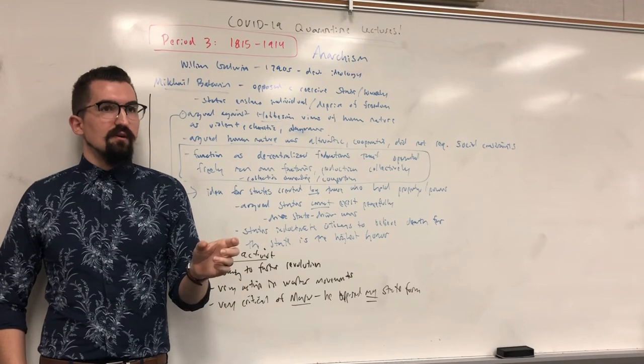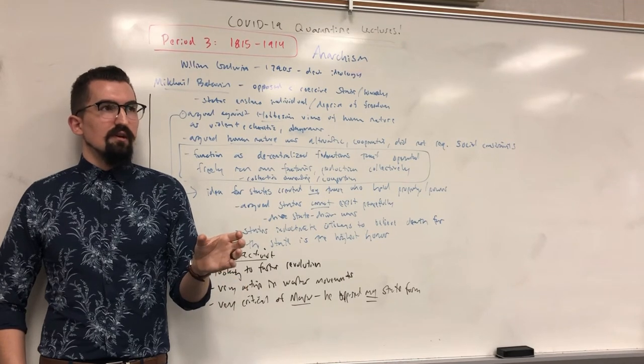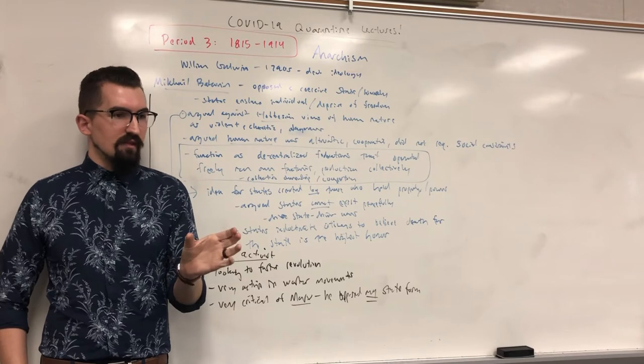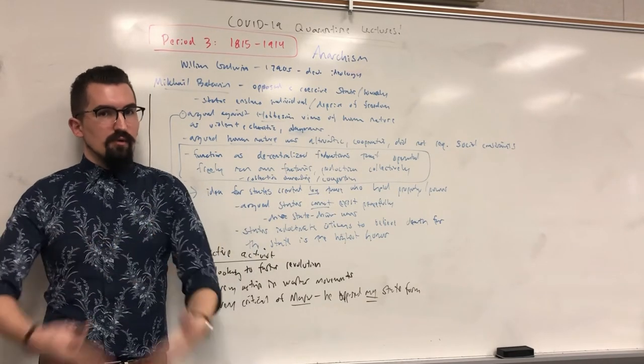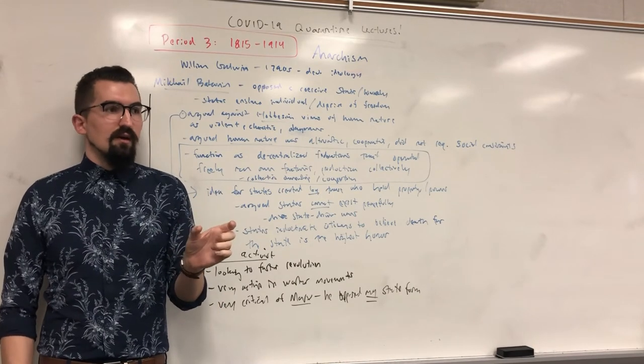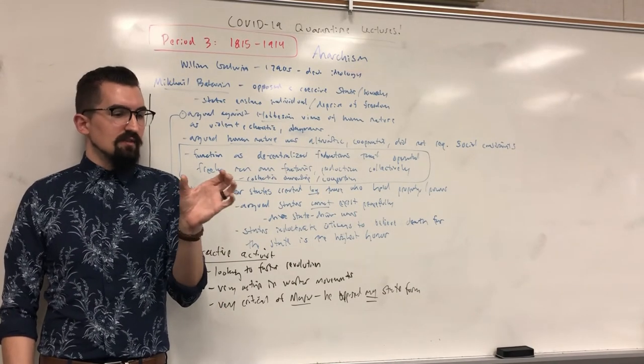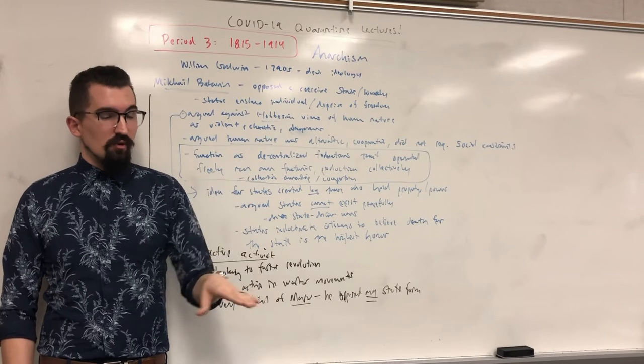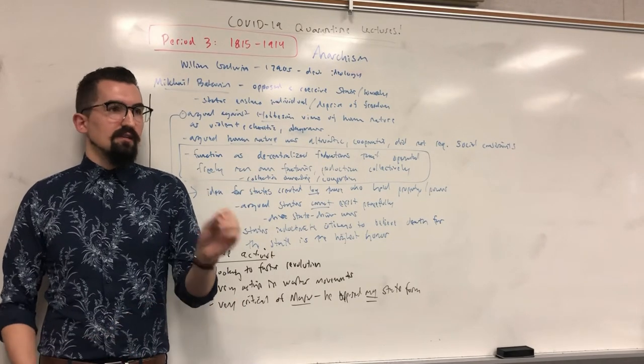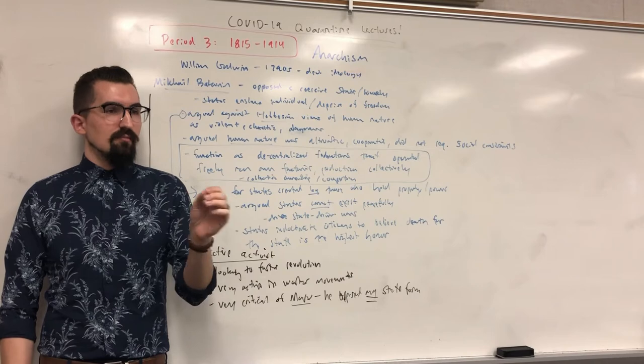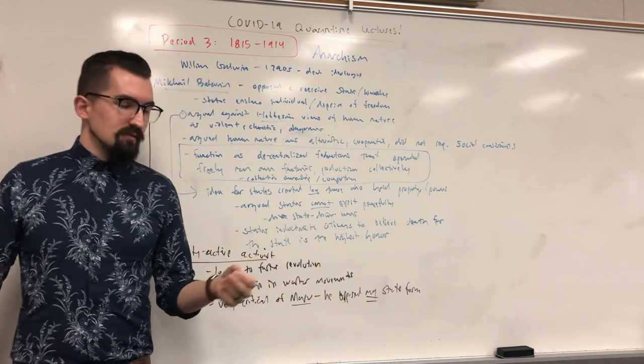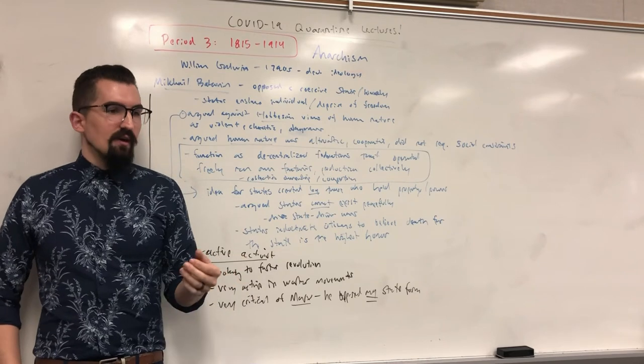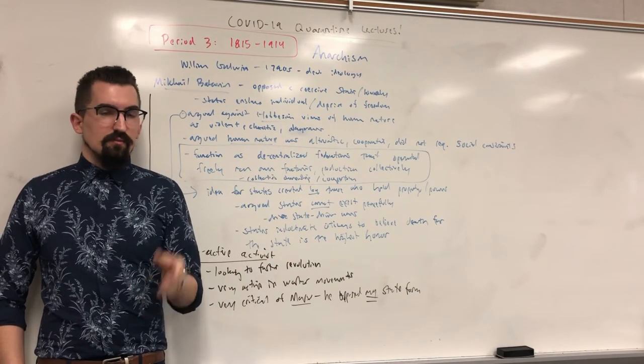So he believed that the dictatorship would not be comprised of the proletariat, for the proletariat. He believed it would be controlled by likely a select few, but certainly the state would function to control the proletariat again. So not a dictatorship for the proletariat, but a dictatorship of the proletariat, in that they would be abused and exploited and subject to violence just as any of the other states were.